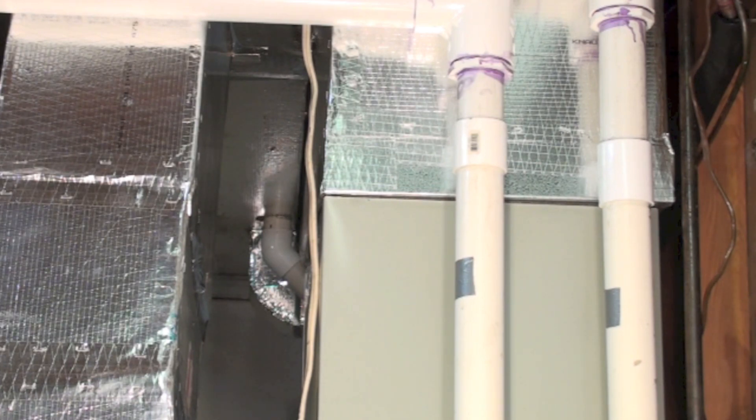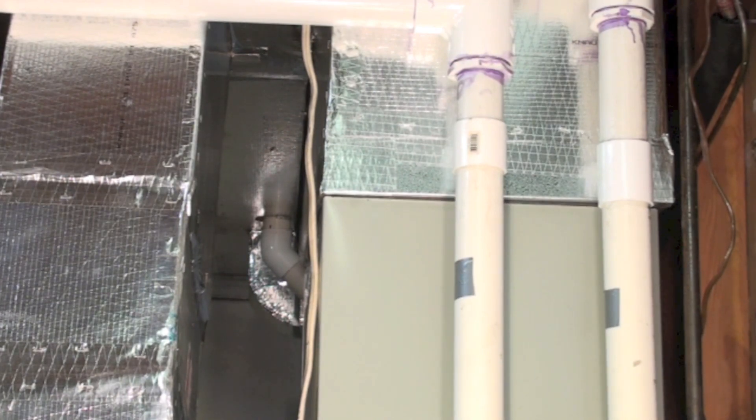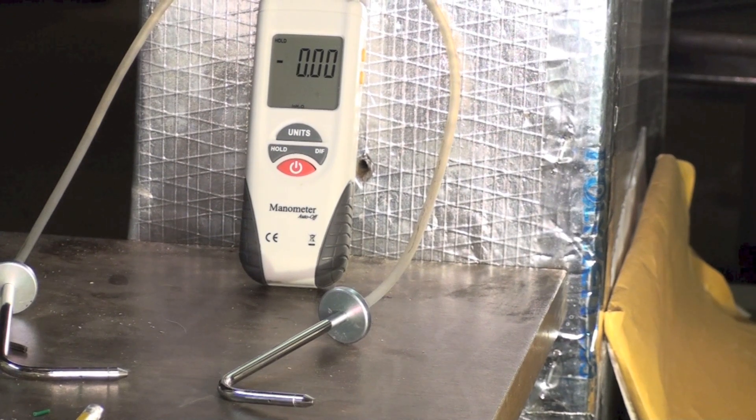That connects up there and the air moves both ways. So what we want to do is take a couple of spots and start checking the static pressure inside these ducts when this thing's running. This is the tool we're going to use - this manometer.